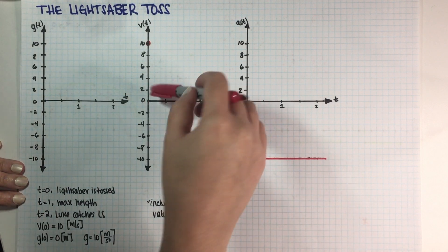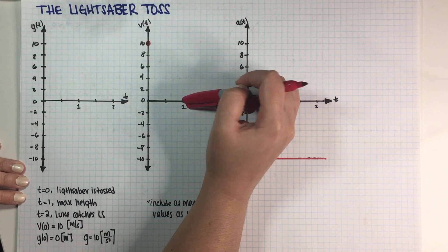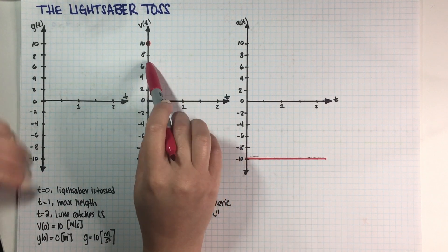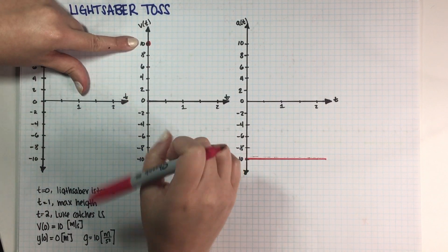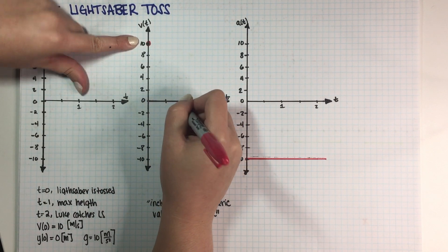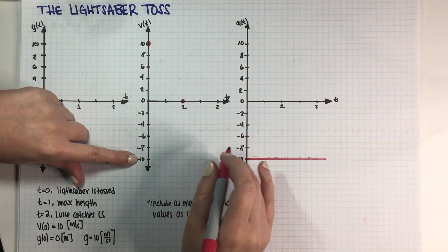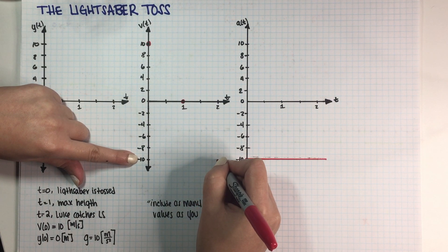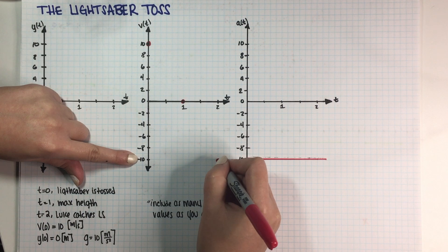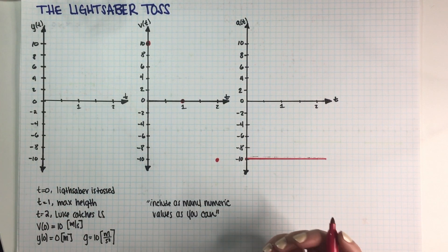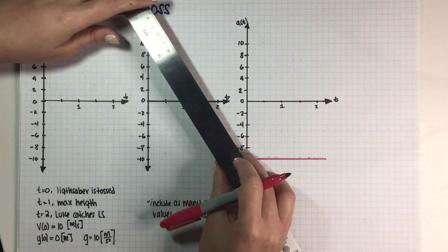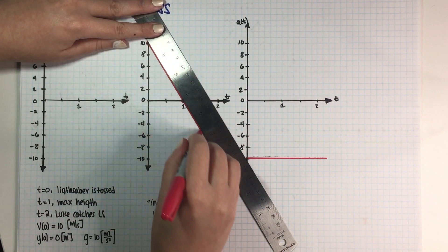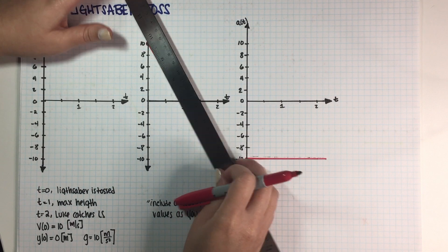For every one second to the right, you're moving 10 meters per second down because this is negative, so it's going down. So that means that if I start at 10, after one second, then I went down 10. And after two seconds, then I went down another 10, which is over here. So if you understand the relationship between velocity and acceleration, then you can just go ahead and do this, then connect the dots and that's it.